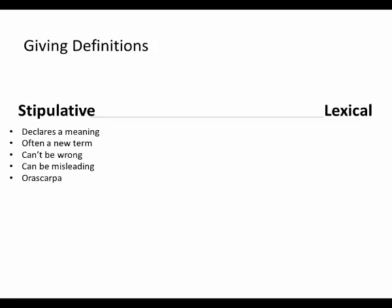And then the other extreme is a lexical definition. A lexical definition, instead of declaring a meaning, is trying to describe an existing meaning. So we have a word or phrase that already means something, and normally we're going to be talking about a word or phrase with origins in ordinary language.